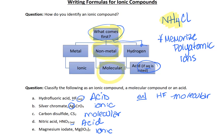So in this case the flow chart would mislead you because you would say what comes first, a non-metal, so this must be molecular. And that logic seems pretty sound. The problem is you have a polyatomic ion NH4 and then you have chloride ion. So this is really an ionic compound.